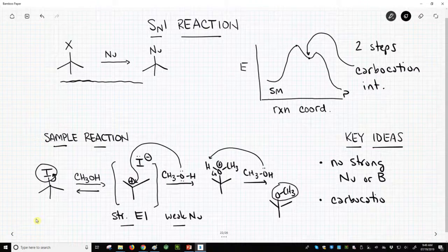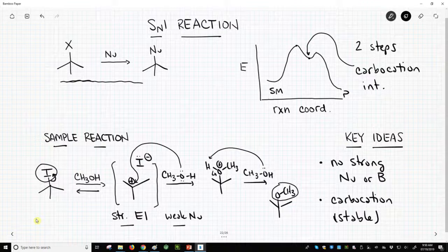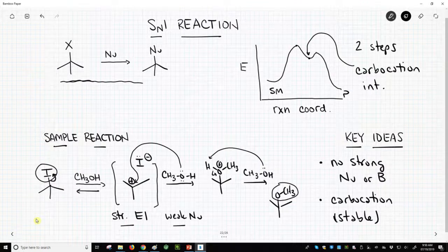And our carbocation better be stable. Now we've drawn a tertiary carbocation. That's as good as we can get. So that is an outline of the SN1 reaction completely different from the SN2 and the E2 reactions.